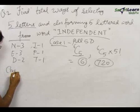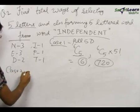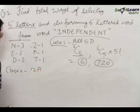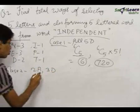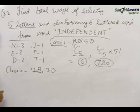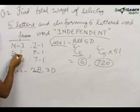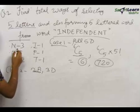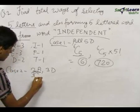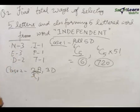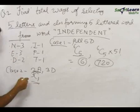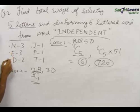Case 2: Two alike and three different. Two alike alphabets can come from N, E, or D. Selecting any one of these three gives us two alike alphabets, so this is 3C1. Let's say we selected N — the remaining alphabets are E, D, I, P, and T, that is five, and we need to select three out of these.